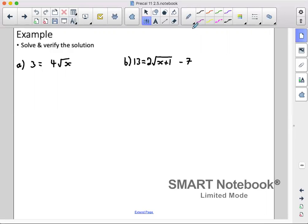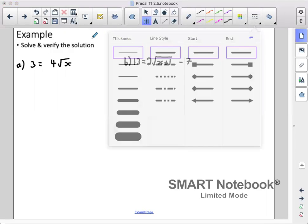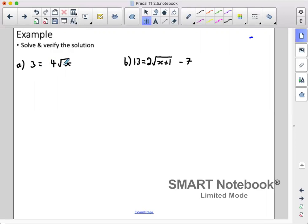This first one we have 3 equals 4 root of x, so we need our root on its own so we divide both sides by 4. So we have 3 quarters equals root of x. Now to get rid of our square root we square both sides.